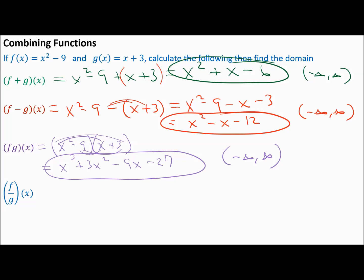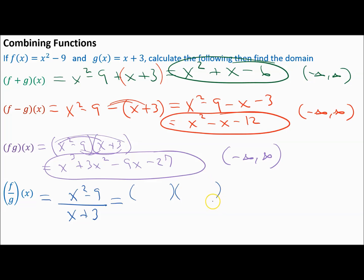Division is always the issue. Place F of X in the numerator — x squared minus 9 — divided by the denominator — x plus 3. You can't cancel individual x's across addition or subtraction. However, you can factor the numerator: x squared minus 9 is a difference of squares.